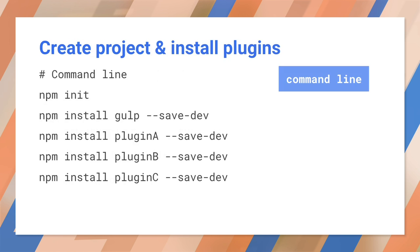Here's an example of creating a project and installing gulp plugins. The first line creates a new npm project. This generates a package.json file that lists your project's plugins. The following commands install various example plugins, including Gulp itself. The --save-dev flag updates the package.json file with the corresponding plugin. The plugins are installed in a node_modules directory. With this method, you can easily reinstall all plugins and their dependencies later by using the package.json file, rather than reinstalling each plugin individually.